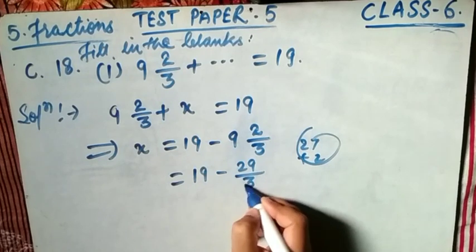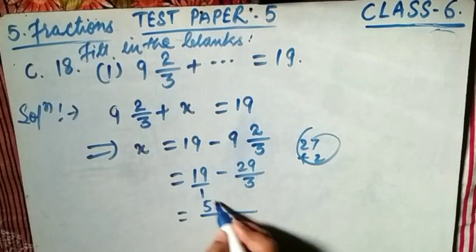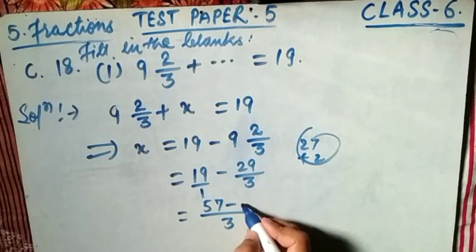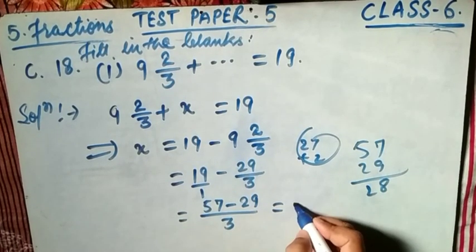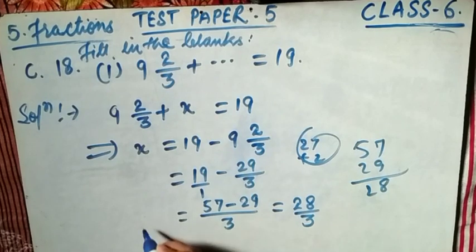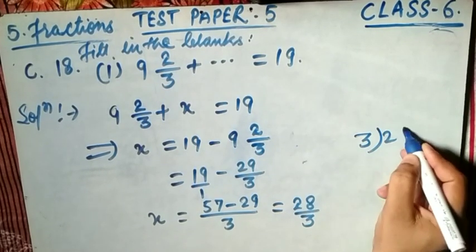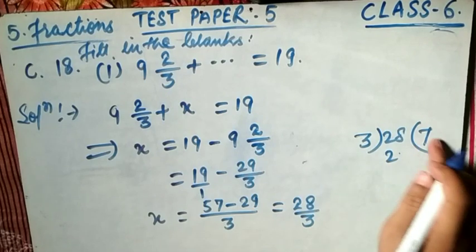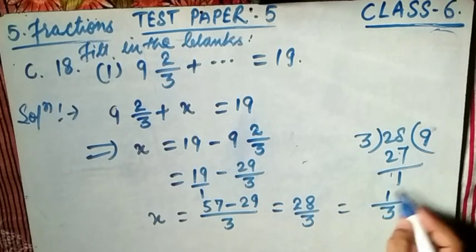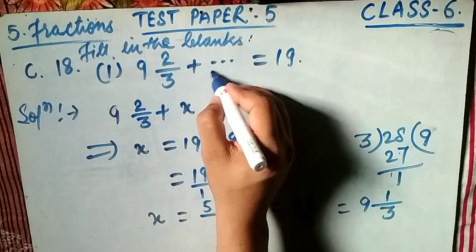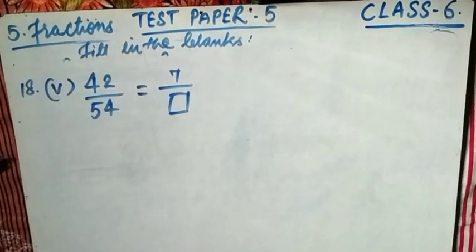Take the LCM of 1 and 3, which is 3. So 19 becomes 57/3. Now x equals 57/3 minus 29/3 equals 28/3. Converting 28/3 to a mixed fraction: 3 goes into 27 nine times with remainder 1, so x equals 9 and 1/3. That is the answer. I hope you understand.